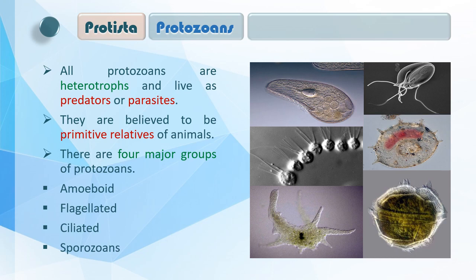इसीलिए नाम protozoa वैसा का वैसा रहा — primitive animals। All protozoas are heterotrophs and live as predators or parasites। यह अपना खाना बिल्कुल नहीं बना सकते, जैसे animals नहीं बना सकते। यह predators हैं — छोटे-छोटे organisms को predate करते हैं, या तो parasites होते हैं — किसी और organism की body में घुस जाते हैं और नourishment लेते हैं। They are believed to be primitive relatives of animals — एक तरीके से ये हमारे पुराने ancestors हैं।